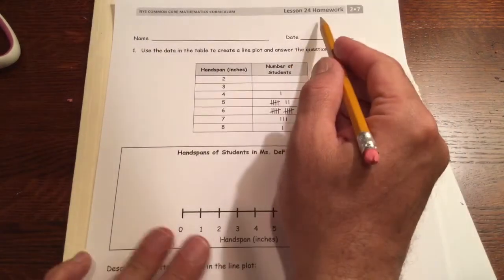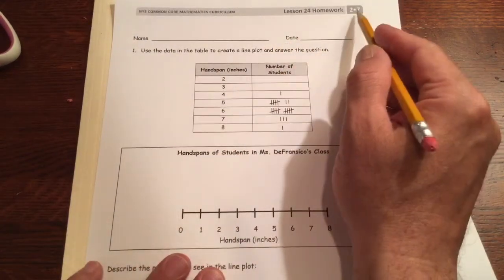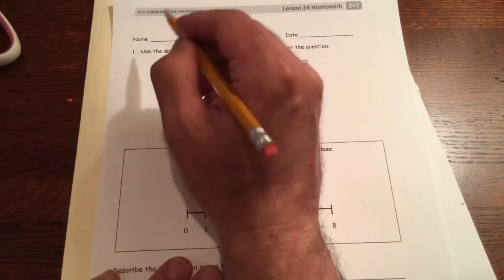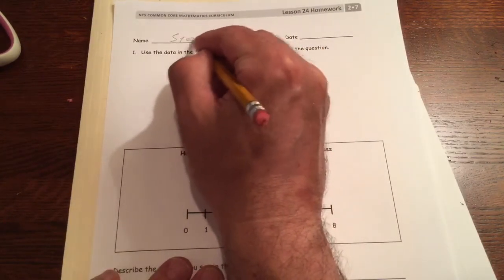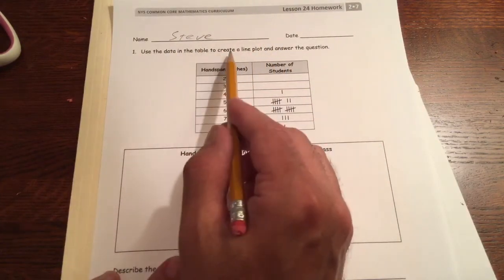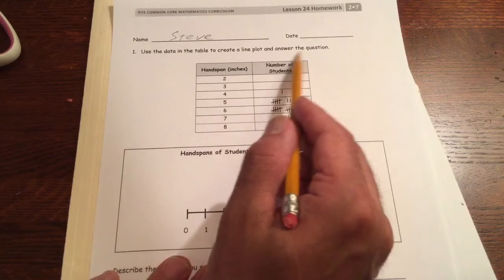This is lesson 24 homework, module 7 of grade 2. Write your name here. Use the data in the table to create a line plot and answer the question.